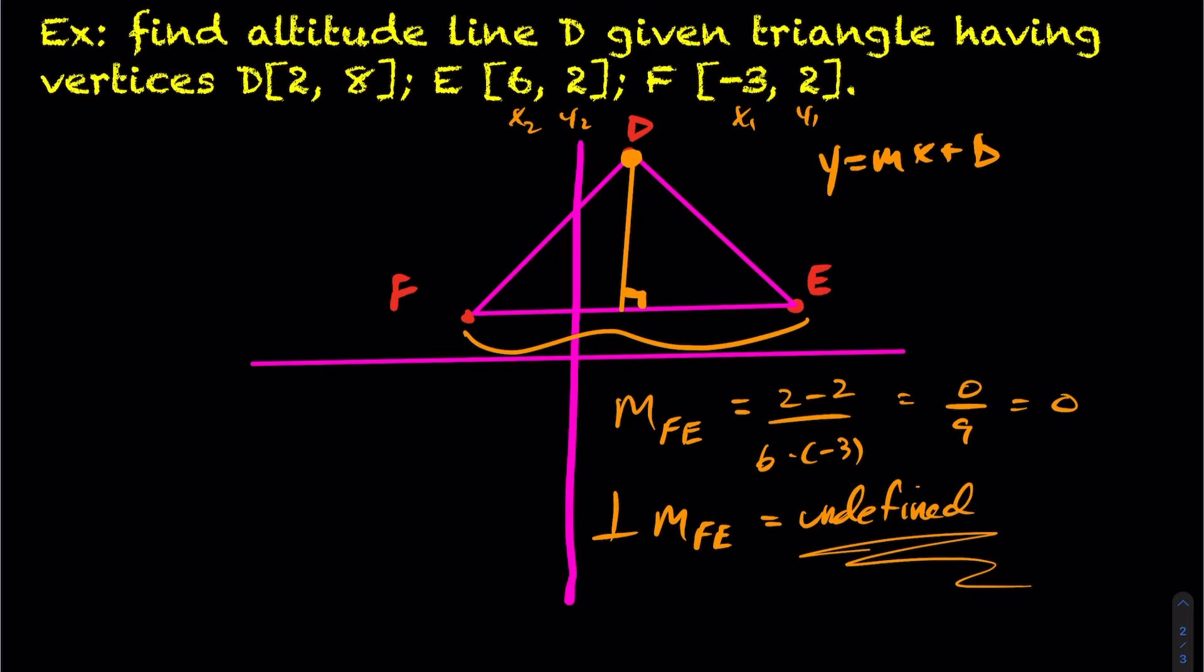So when you have an undefined slope, what does that mean? Well, if you have an undefined slope, undefined slopes are x equals equations. If you have an undefined slope, it's going to be x equals to what? This vertical line is going to be x equals to what? I have to look at what the actual points of point D is. This is point 2 and 8. So that means that this line here is going to be x equals 2.